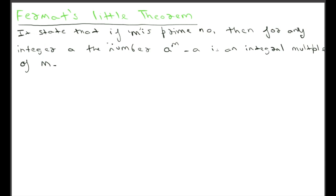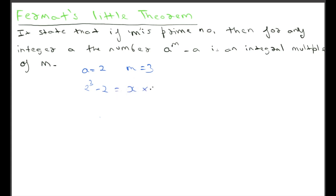Fermat's Little Theorem states that if M is a prime number, then for any integer A, the number A to the power M minus A is an integral multiple of M. For example, if A is 2 and M is 3, then 2 to the power 3 minus 2 equals some number X multiplied by 3. Let's verify: 2 to the power 3 is 8, and 8 minus 2 is 6, which equals 2 multiply 3. So here X is 2.